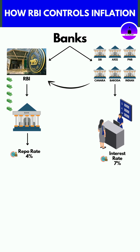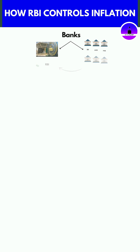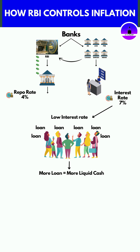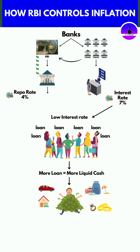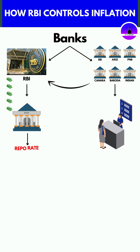When the interest rate is low, people tend to borrow more money from the bank. More money means more liquid cash in the market, which leads to an increase in public demand. People tend to spend more than they actually require, thus leading to price hikes.